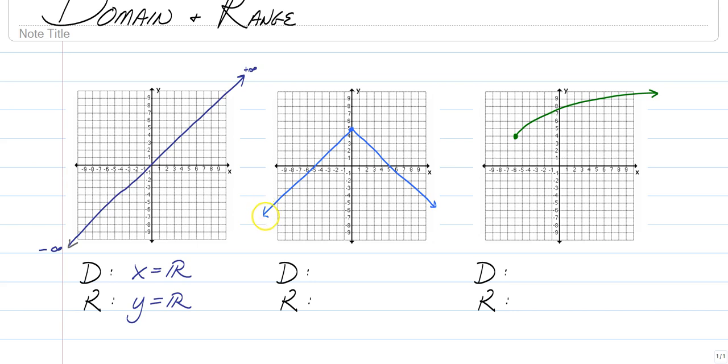Because remember, arrows means it keeps on going in that direction. So this keeps on going to the left and down. This keeps on going to the right and down. So since it goes left and right forever, your domain again is x is equal to all real numbers.